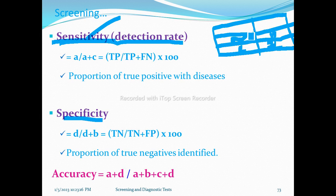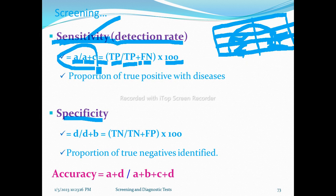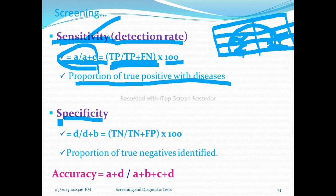In the 2x2 table: A is true positive, B is false positive, C is false negative, and D is true negative. Sensitivity is A over A plus C — that is, true positive over true positive plus false negative.